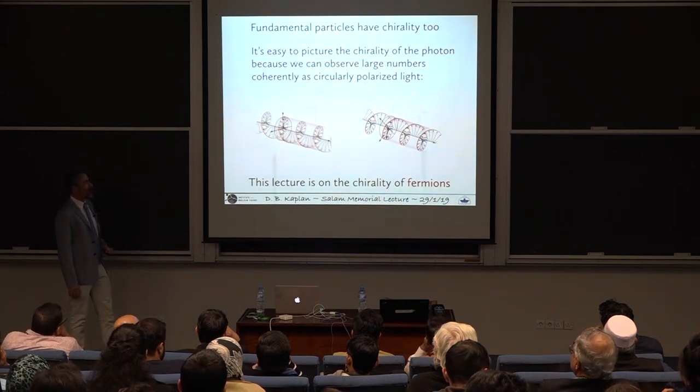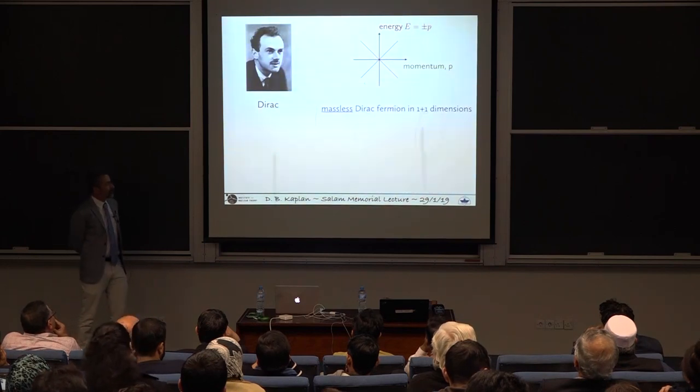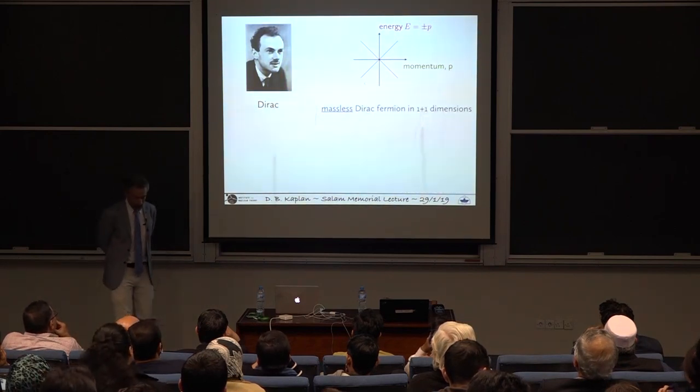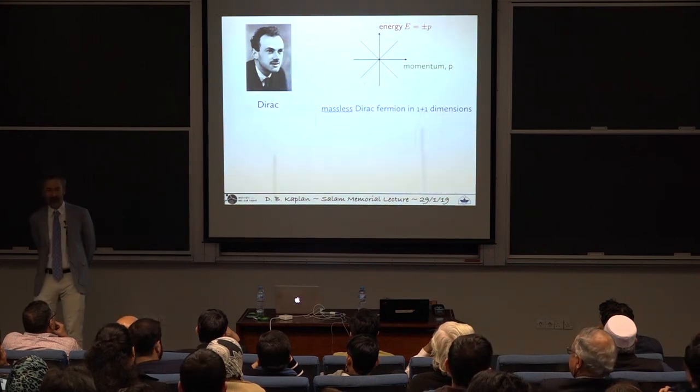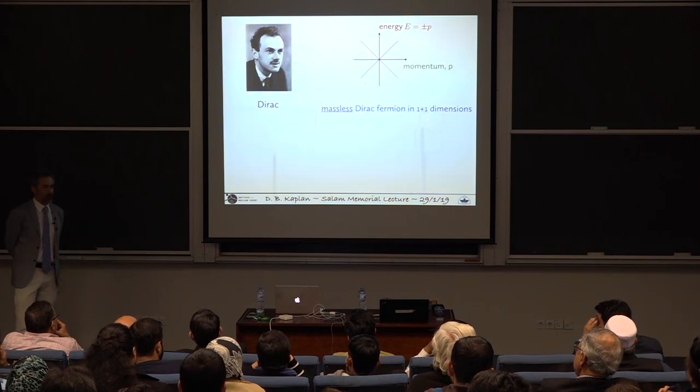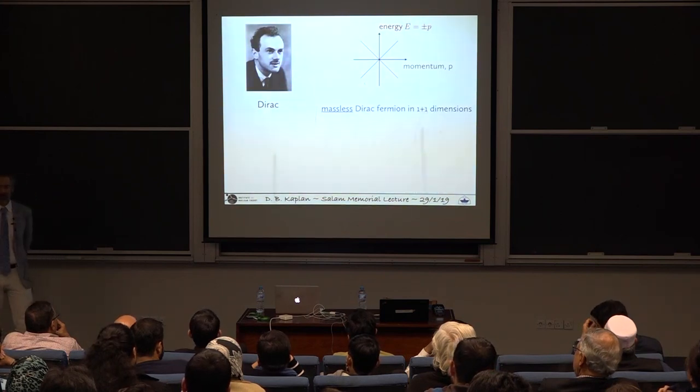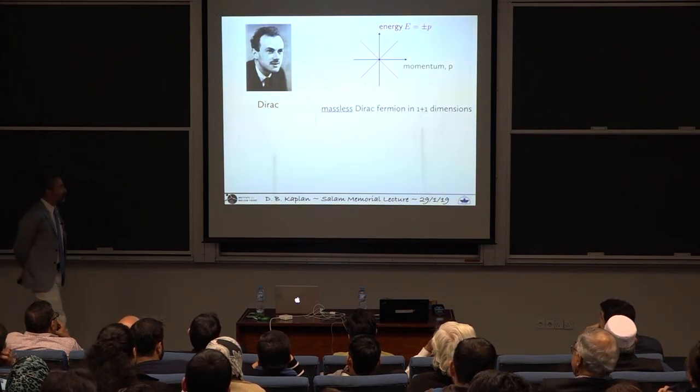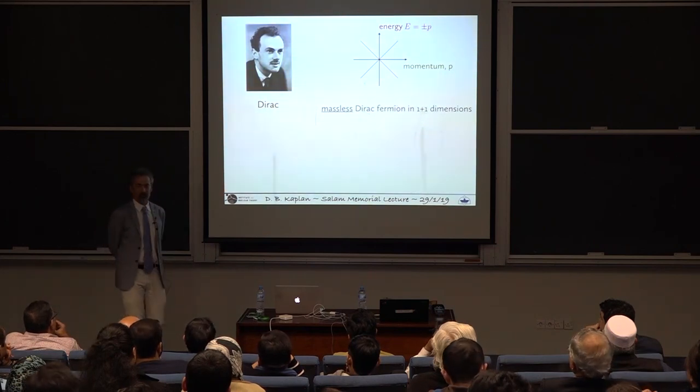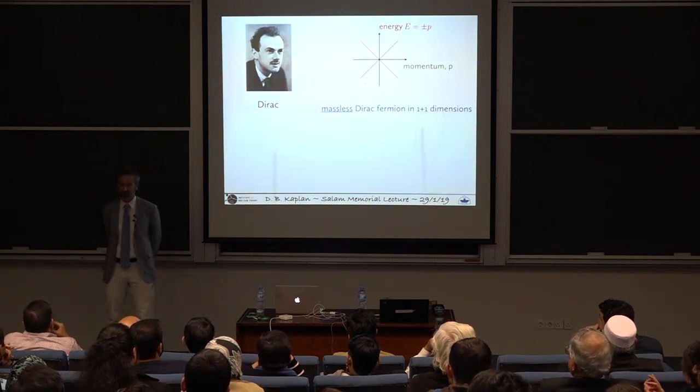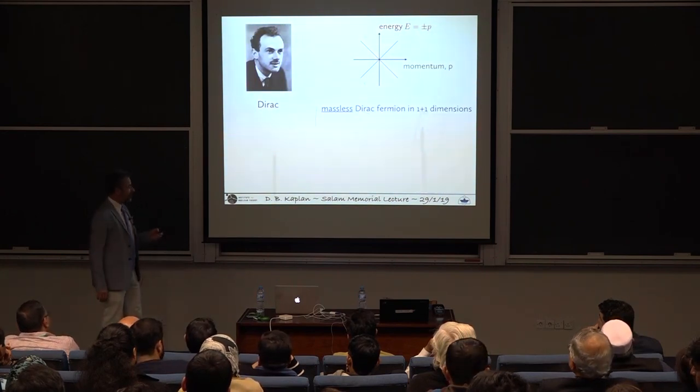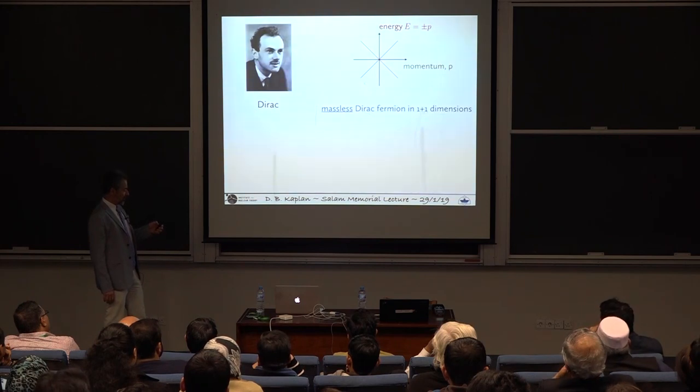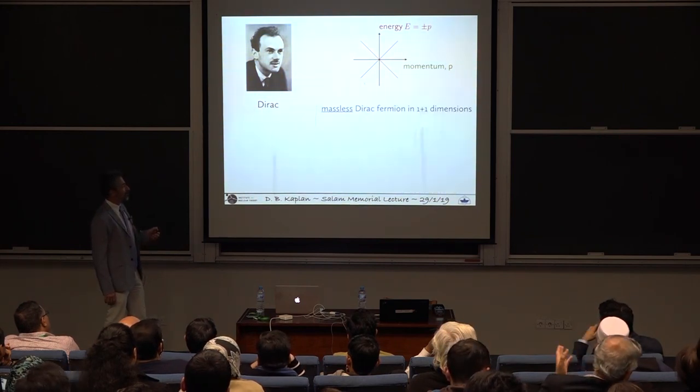However, today I'm going to be talking about a different type of particle which is the fermions. The fermions are the particles that make matter with the electrons and quarks and neutrinos. They also have an intrinsic handedness. The modern view of the fermions was discovered by Dirac, an incredibly creative physicist who was trying to reconcile quantum mechanics and relativity in the 20s.